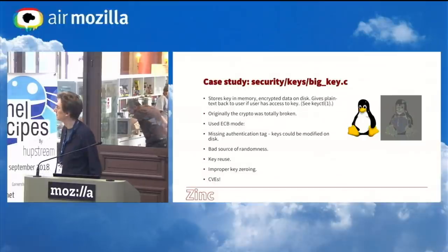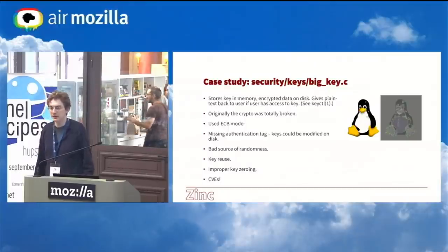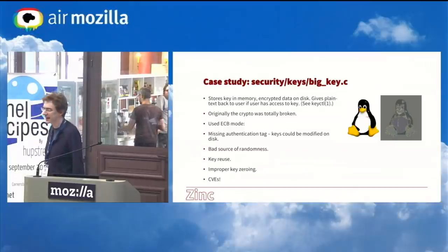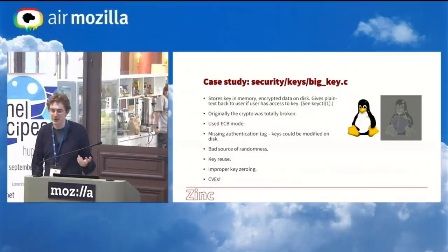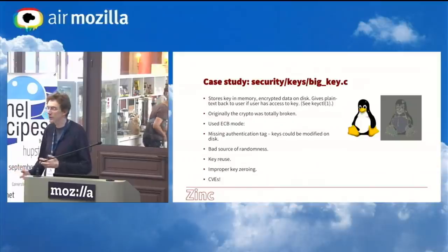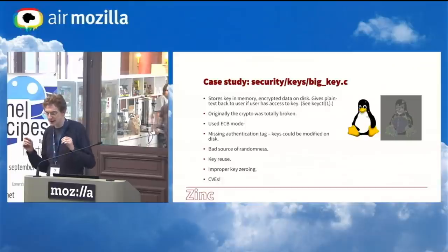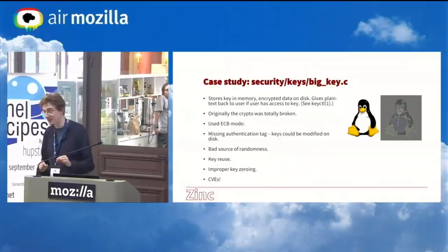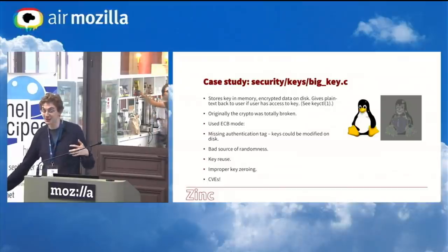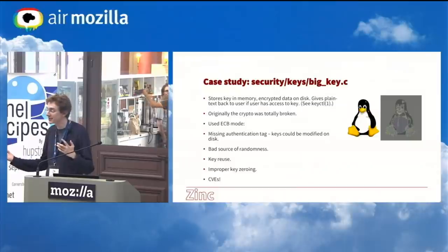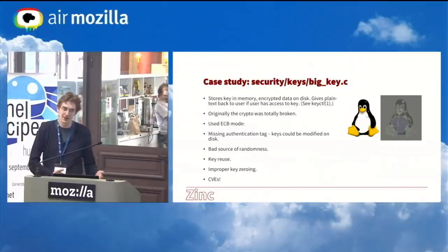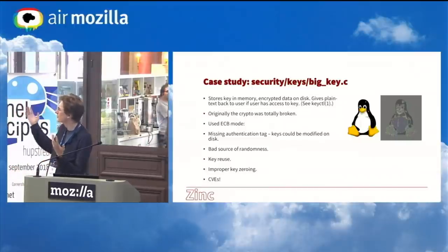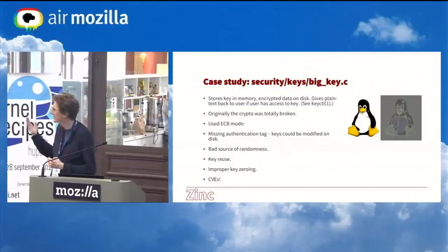Let's do a little case study — not of WireGuard, but of something even smaller: BigKey. It's a key type for the kernel's key retention system where you can give keys to the kernel, it'll keep them in memory and only give access if you have certain permissions. But if you want to give a really big key, there's a scheme where it will encrypt your key with another key, keep that key in memory, and write the encrypted ciphertext on disk. So if you have like a megabyte key, you won't have to store that in unswappable memory. Someone with access to the disk can't get access to your key.